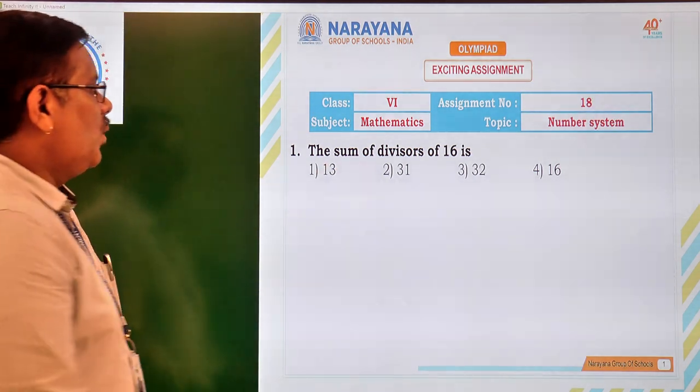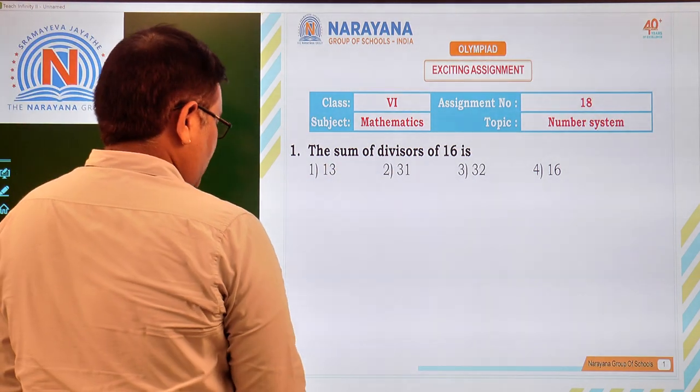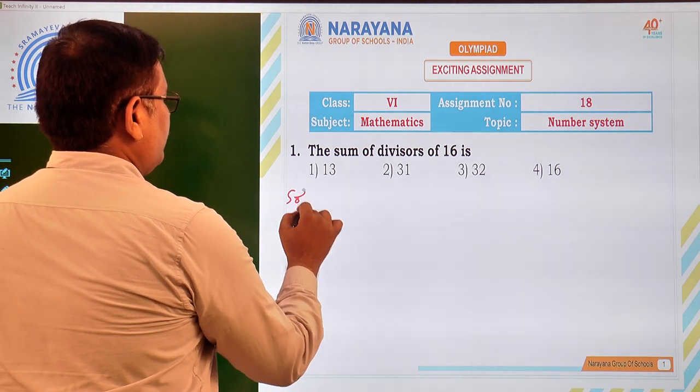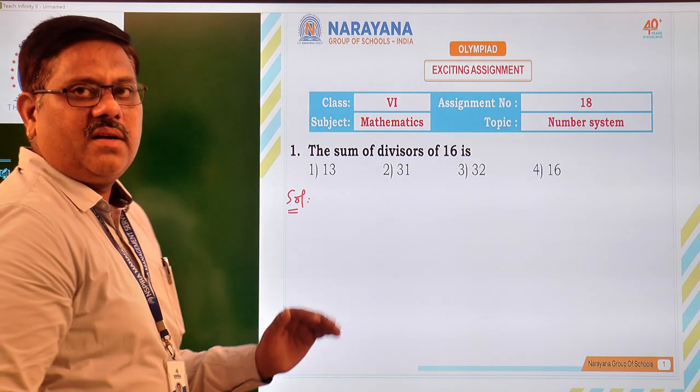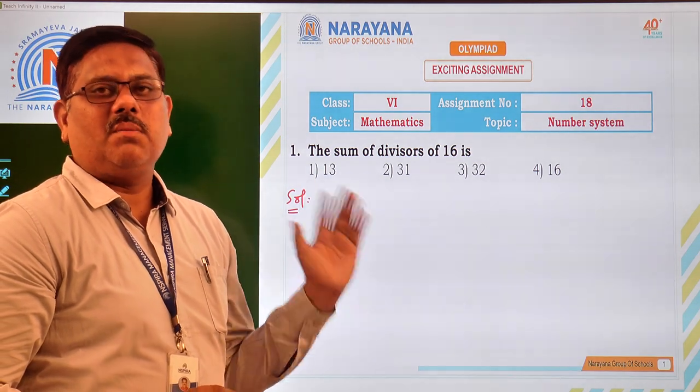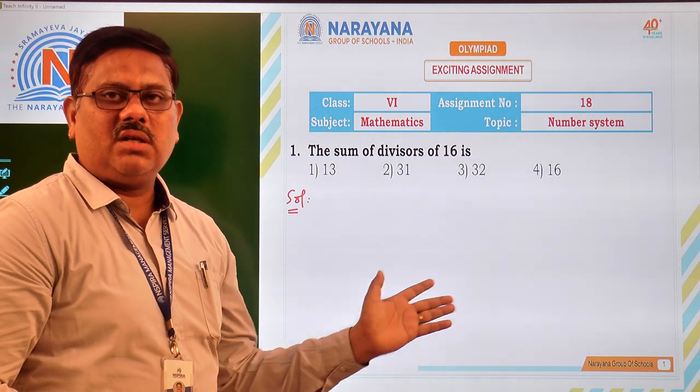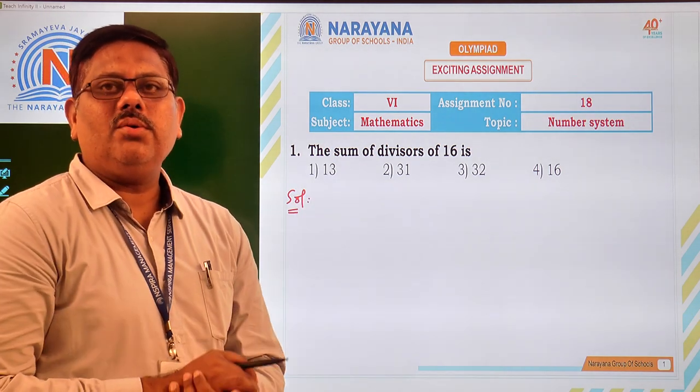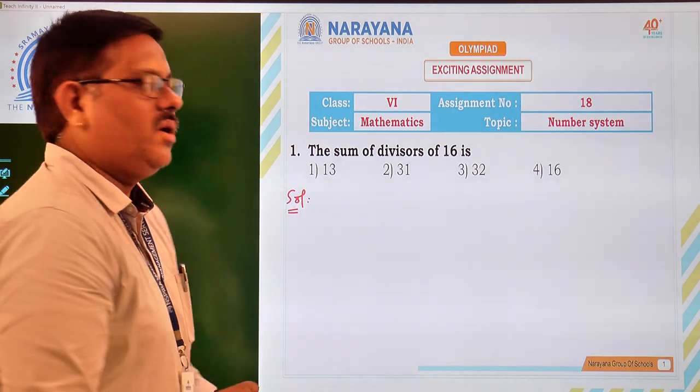Now let us start with the first question. What is that? The sum of the divisors of 16. Whether you are finding number of divisors or sum of the divisors or product of divisors, first step is writing the given number into its standard form. Now let us do that.